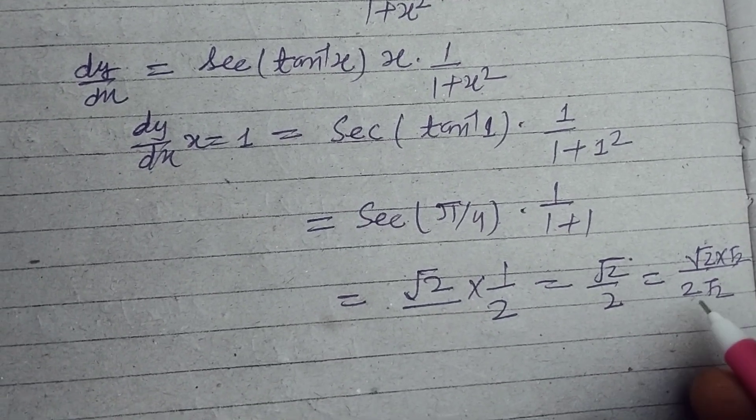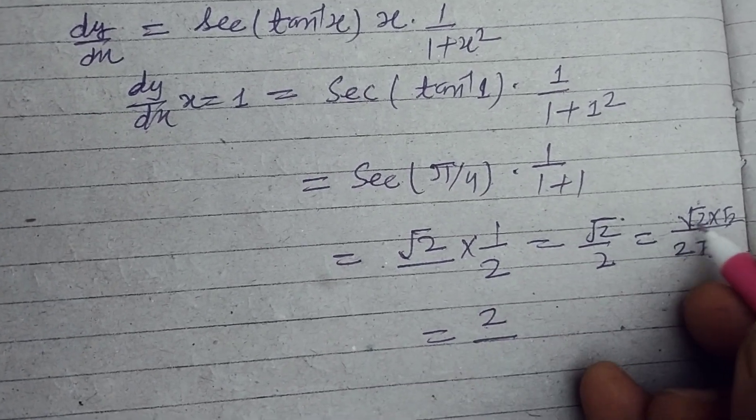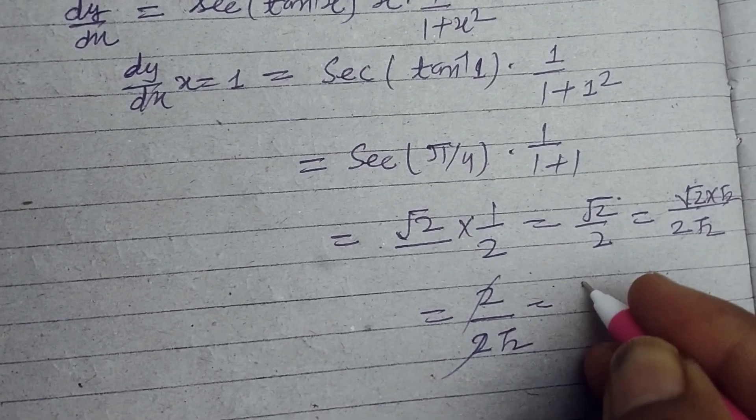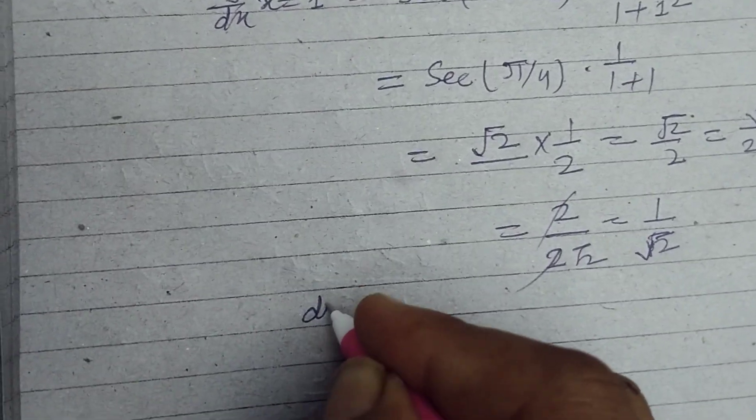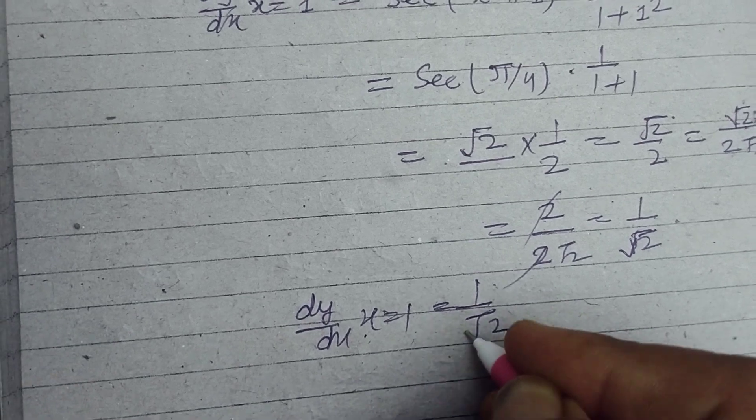We get root 2 into 1 upon 2, so this is cancelled to 1 upon root 2. So dy/dx at x equals 1 equals 1 upon root 2.